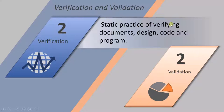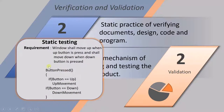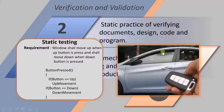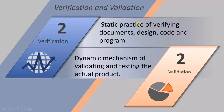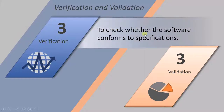The second point: verification is a static practice of verifying documents, design, code, and program, whereas validation is a dynamic mechanism of validating and testing the actual product. Verification is associated with static testing and validation with dynamic testing. In our example, we were verifying the code without running it — that is a static practice — whereas in the dynamic example the window is moving, meaning the code is running.